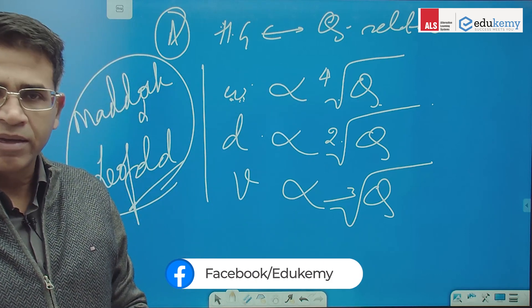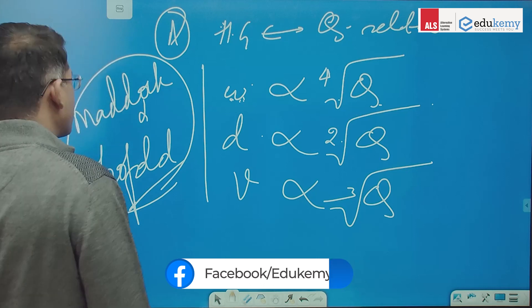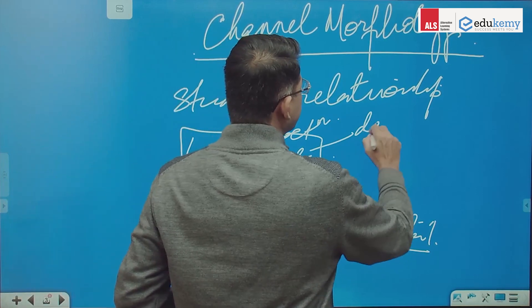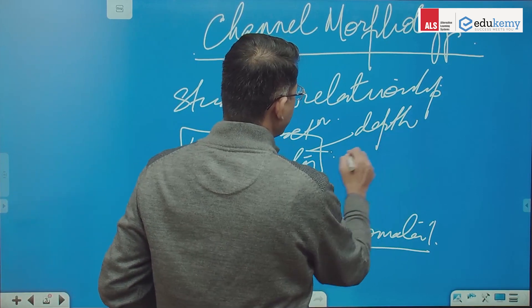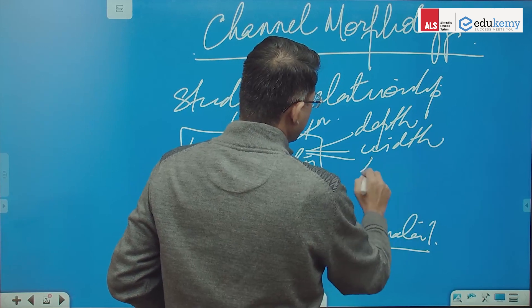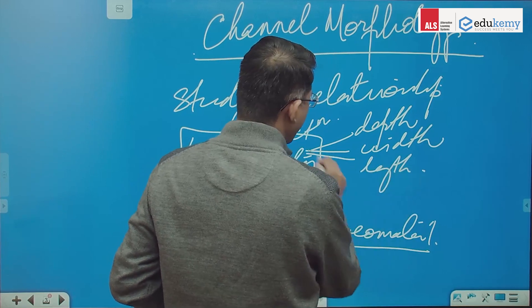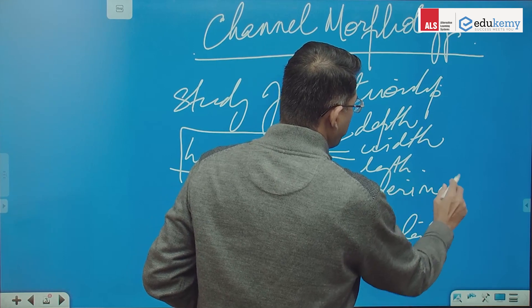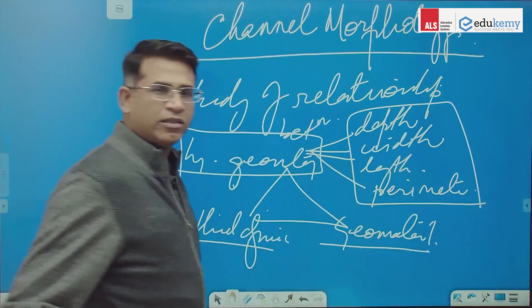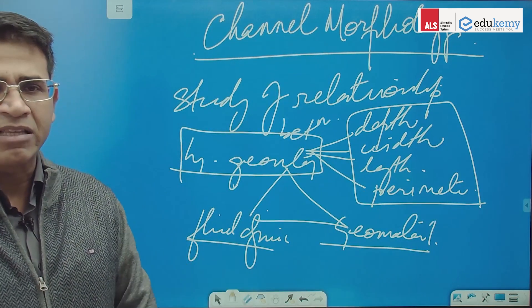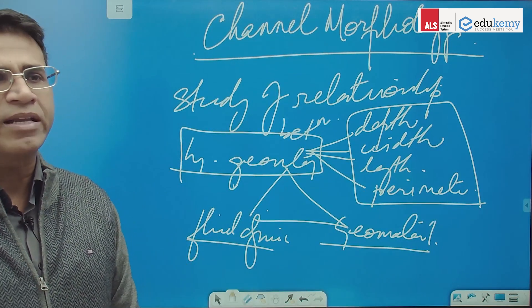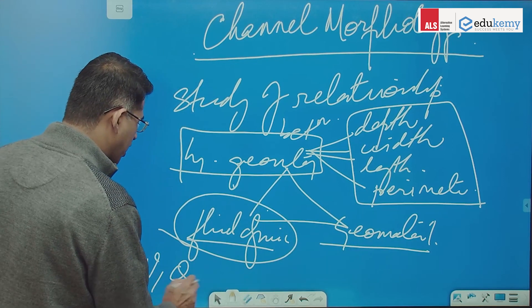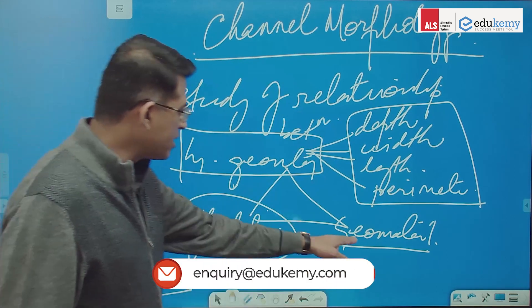Hydraulic geometry. What does hydraulic geometry mean? It means depth of the channel, it means width of the channel, it means length of the channel, it means the perimeter, the wetted perimeter of the channel. That is geometry - what you can measure in terms of length, width, and so on. That's the geometry.